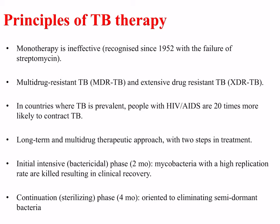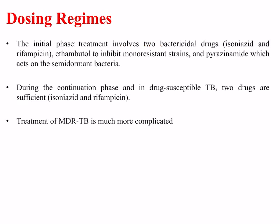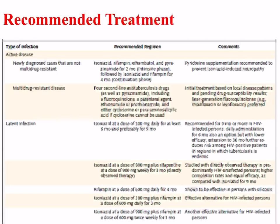Long-term and multi-drug therapeutic approaches exist with two steps in treatment. The first is the initial intensive or bactericidal phase, lasting around two months, where mycobacteria with a high replication rate are killed, resulting in clinical recovery. The second is a continuation or sterilization phase for around four months, orientated to eliminating any semi-dormant mycobacteria. The initial phase involves four drugs: two bactericidal drugs, isoniazid and rifampicin, then ethambutol to inhibit monoresistant strains, and pyrazinamide which acts on semi-dormant bacteria. During the continuation phase in drug-susceptible TB, two drugs are sufficient: isoniazid and rifampicin. This table summarizes these regimens and their doses and durations.